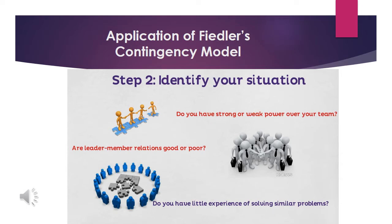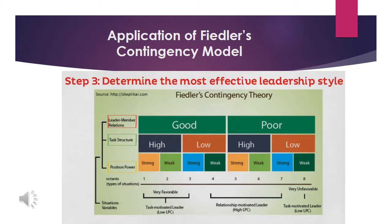Step two is to identify your situation by answering these questions: Are leader-member relations good or poor? Is the task structured or unstructured? Do you have little experience solving similar problems? Do you have strong or weak power over your team? Step three is to determine the most effective leadership style using a chart that breaks down all factors — leader-member relationship, task structure, and leader position power — to identify the type of leader Fiedler believed would be most effective in each situation.